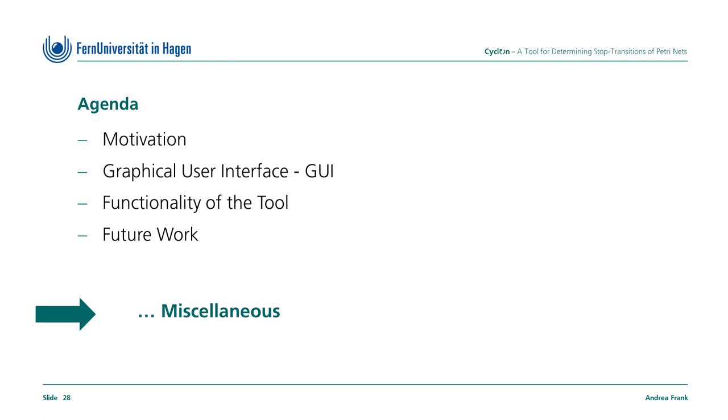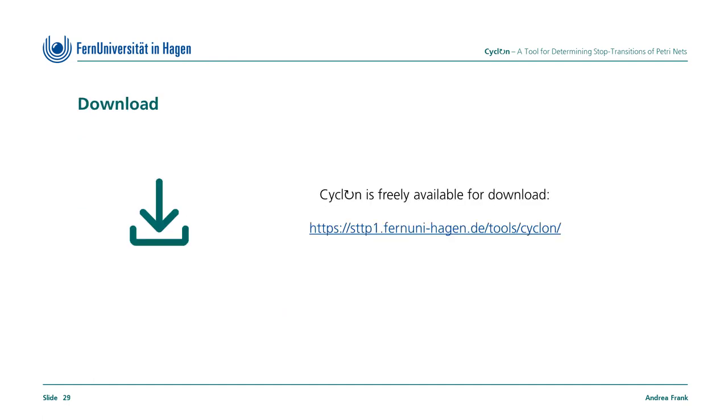At the end of this presentation, some miscellaneous information follows. If you want to use Cyclone, you can download the tool from our website. It's freely available. The tool was developed with Java and therefore it is system independent on Windows, Linux and Mac systems. All you need to do is unzip the file and Cyclone is ready to run. Various examples are also included and can be opened immediately using shortcuts.